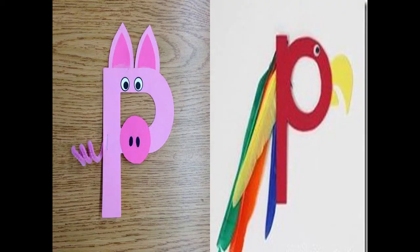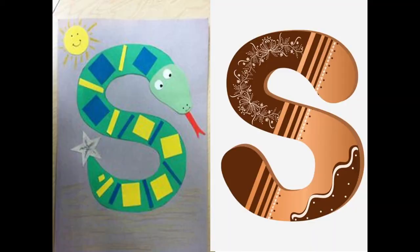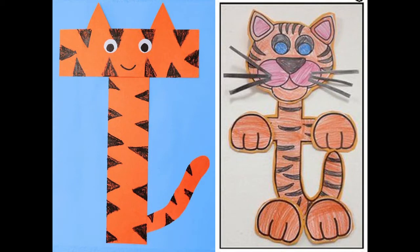Now children, tell me what sound does letter P make? P says P. S says S. And T says T. Now children, we already have seen the objects that begin with letter P, S, and T.